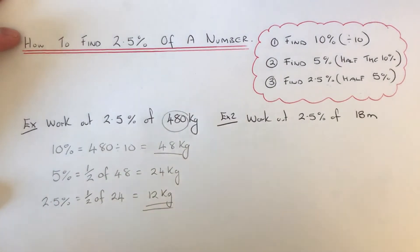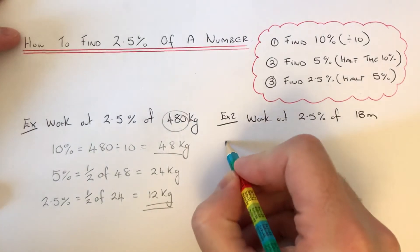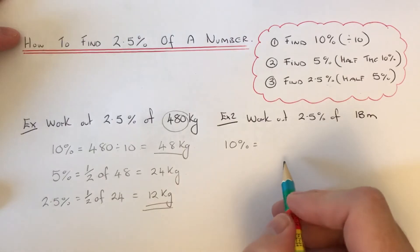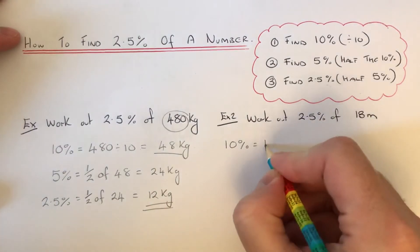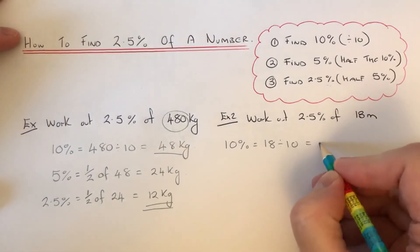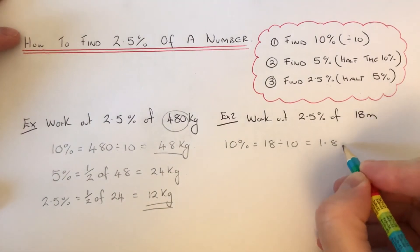So let's do one more example. This one's a little bit harder. We've got to work out 2.5% of 18 meters. So first of all, start off with 10%. To get 10%, we divide our number by 10. So 18 divided by 10 is 1.8.